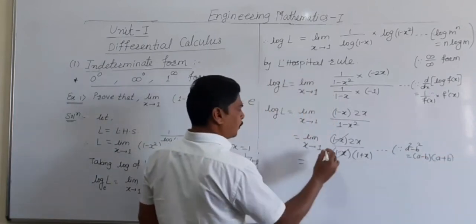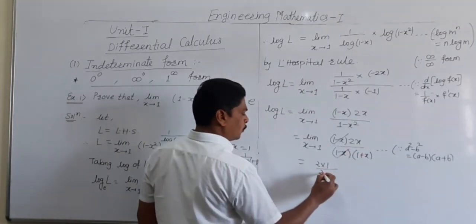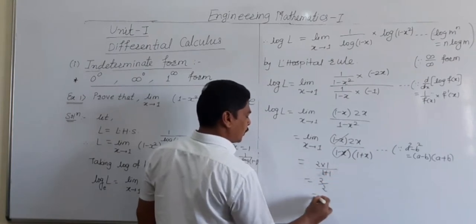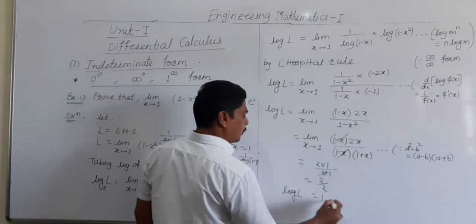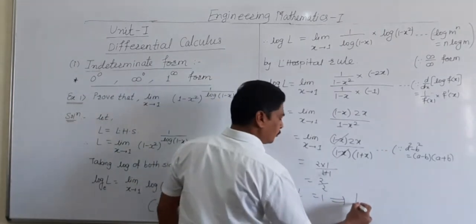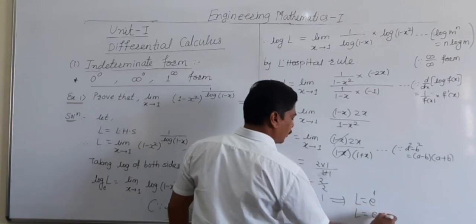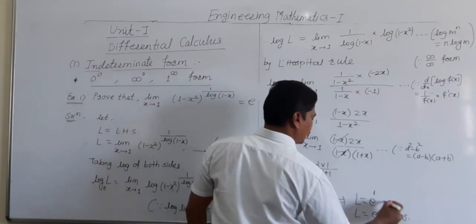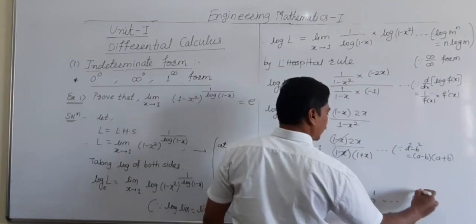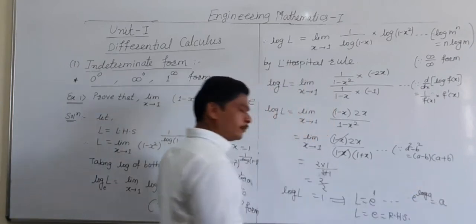Now putting the limit x equal to 1 in the remaining function, we get 2 times 1 divided by (1 plus 1), which equals 2 divided by 2, which equals 1. So log L equals 1. This implies L equals e raised to 1, so L equals e, which is our required answer. Since e raised to log A equals A.